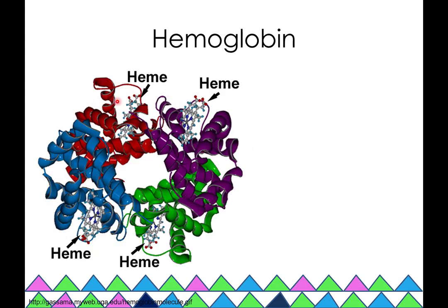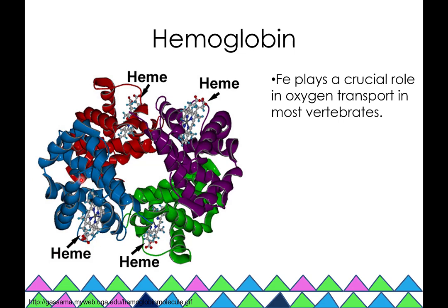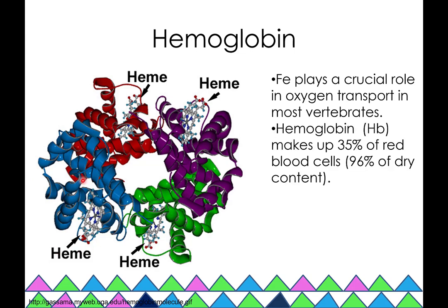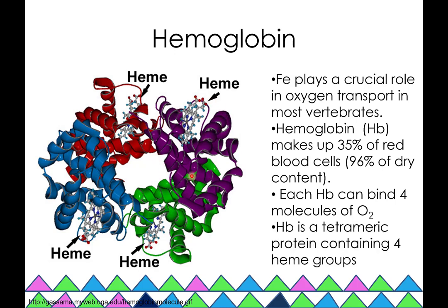Hemoglobin is an incredibly important protein because it is what transfers oxygen in most vertebrates. Hemoglobin makes up 35% of our blood cells, or 96% of our red blood cells if you remove the water. Each hemoglobin protein can bind four molecules of oxygen. It's a tetrameric protein with four heme groups.